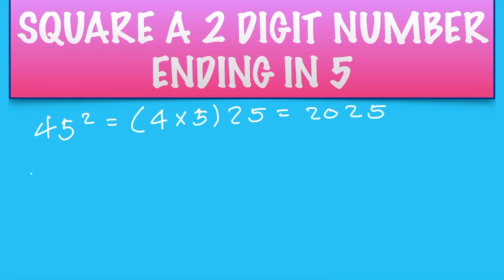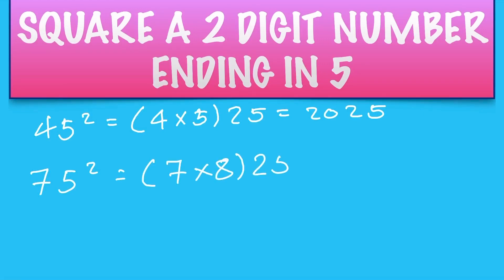Let's take another one: 75 squared. You take the 7 times the next number, which is 8, and put a 25 on the end. 7 times 8 is 56, so that's 5625.